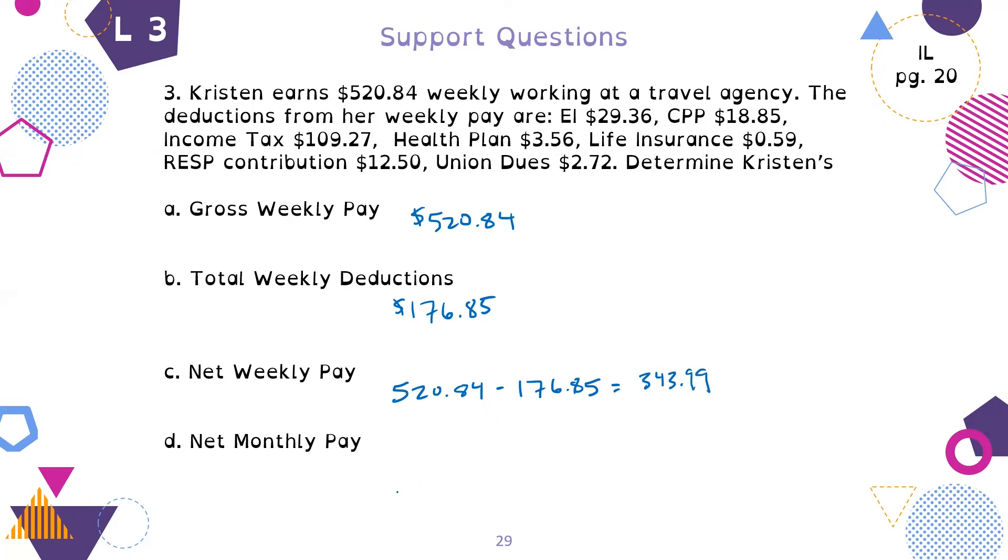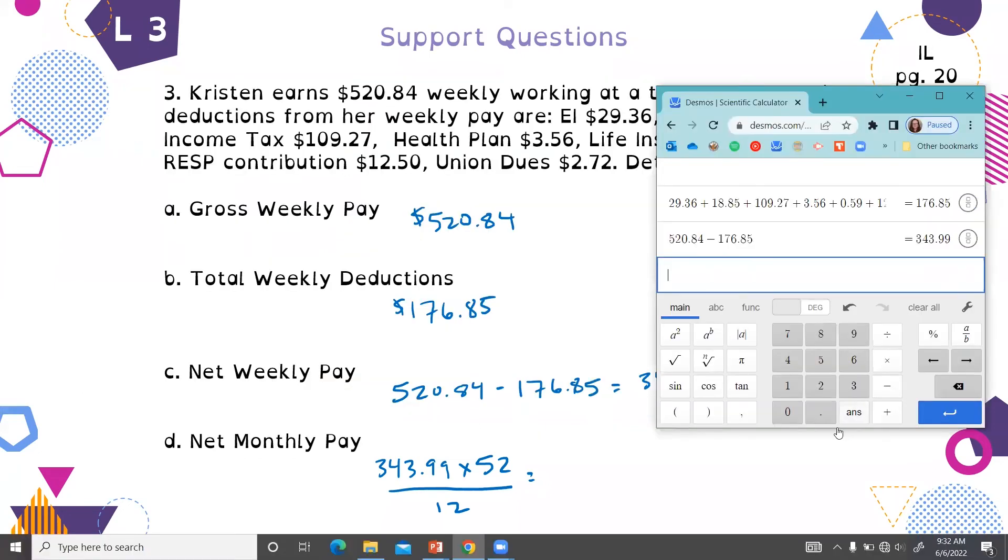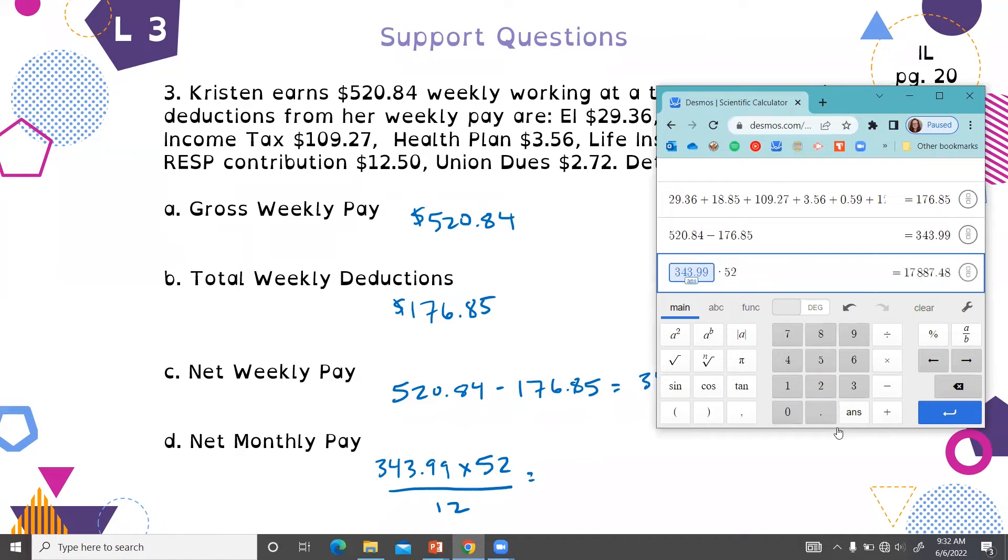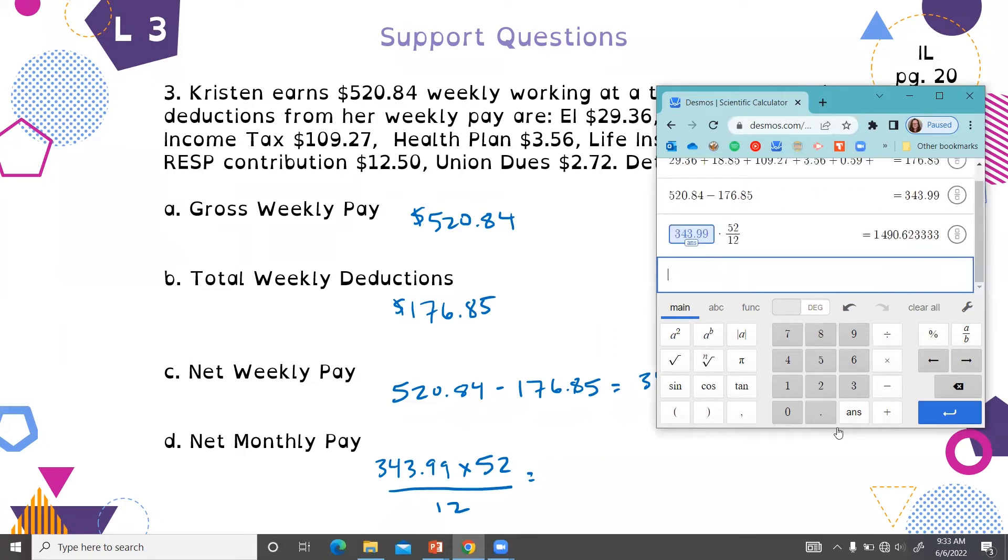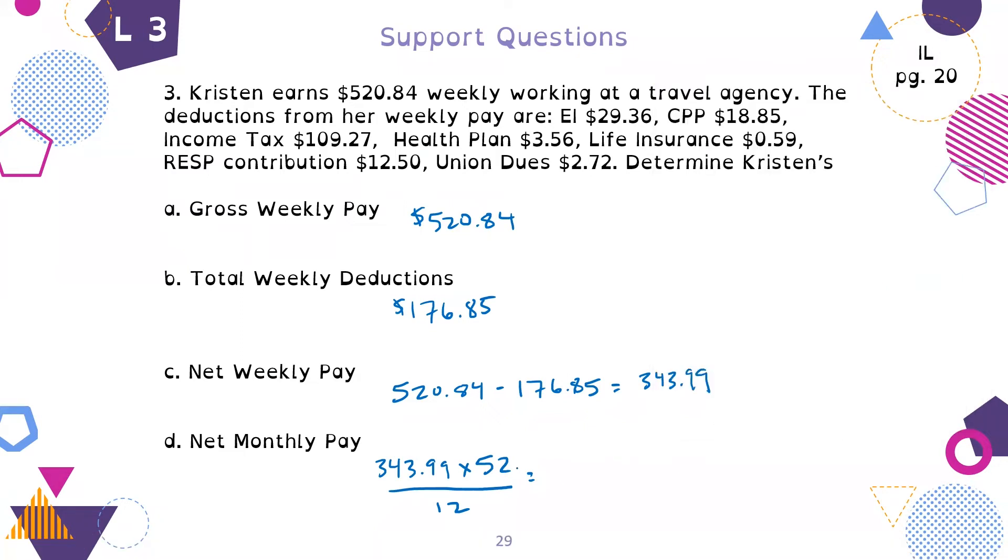Then D, net monthly pay. Here I want to multiply by four because there's four weeks in a month, but there are not exactly four weeks in a month. To find your monthly pay from your weekly pay, you need to take your net weekly income and times it by 52 and then divide it by 12. We times by 52 to figure how much we get in a year, then divide by 12 to figure out how much we would get in a month. So $1,490.62 is how much you get per month.